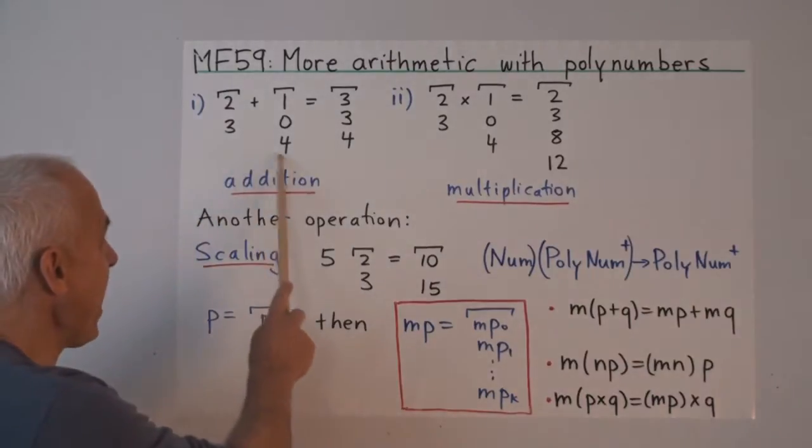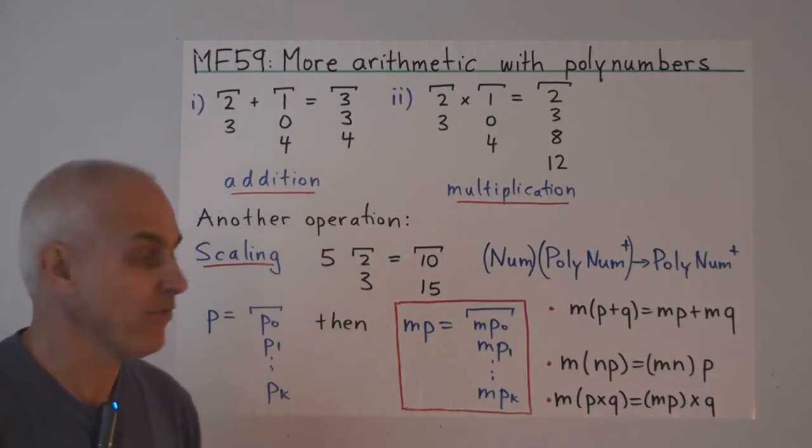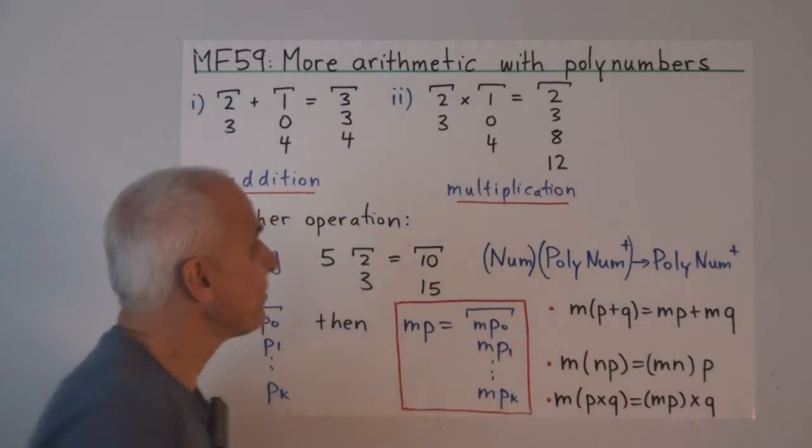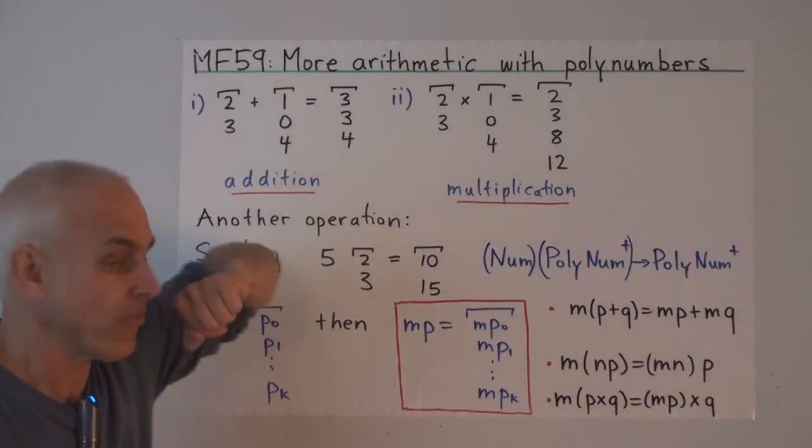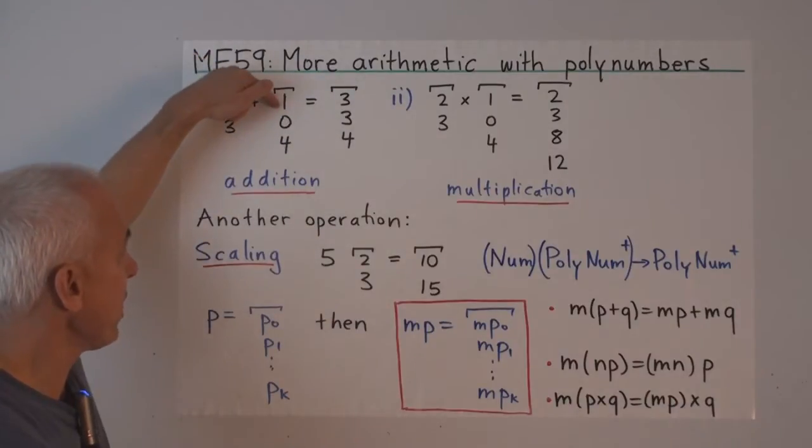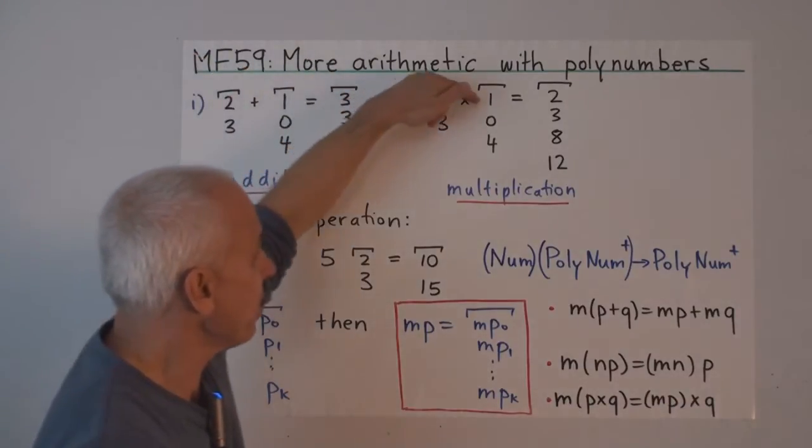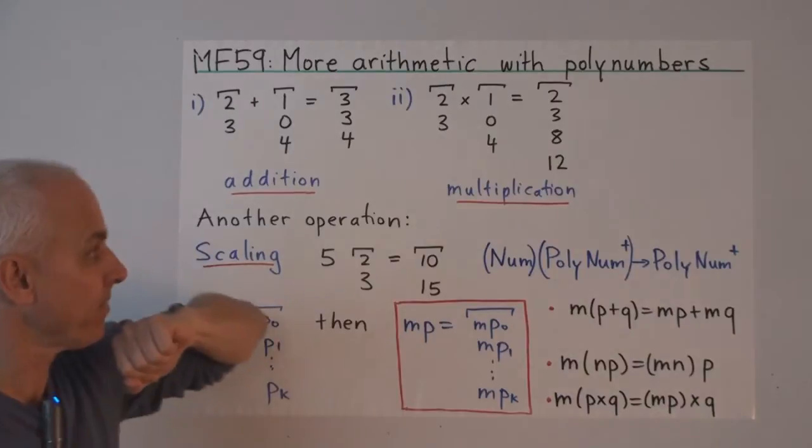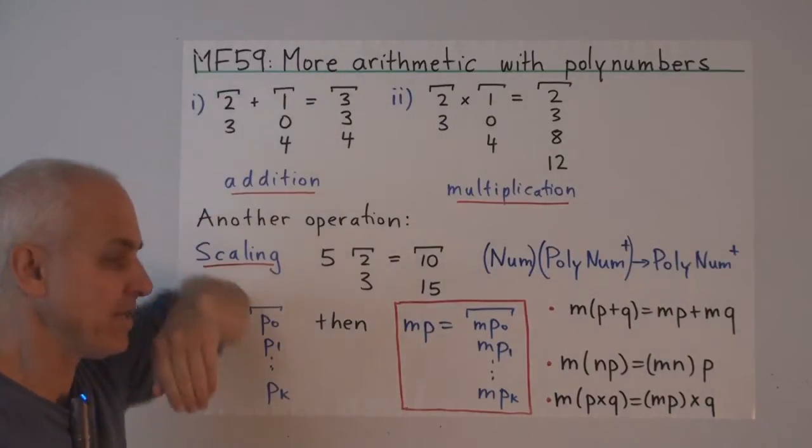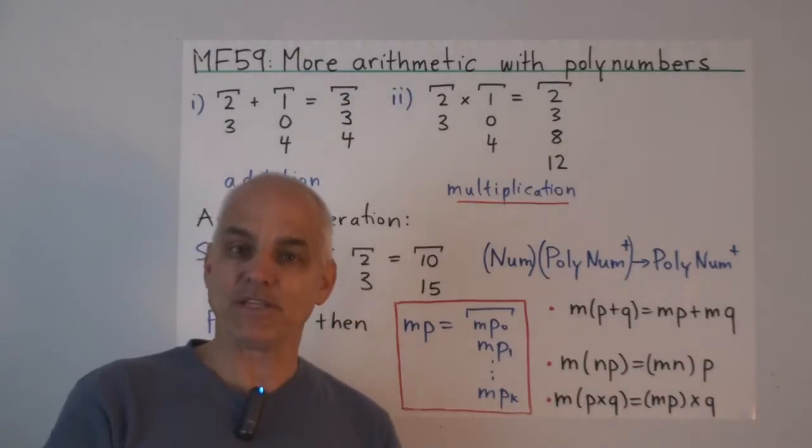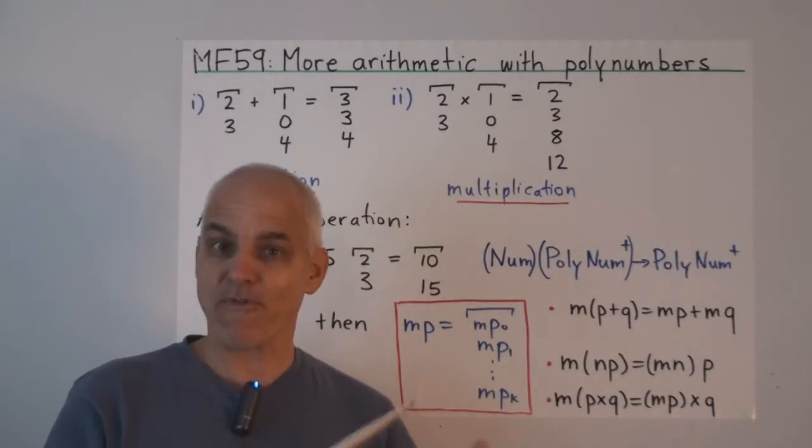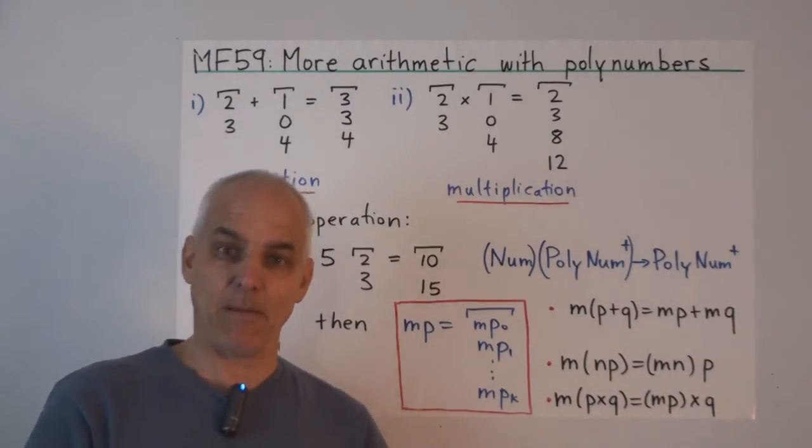If you look at the way we add to positive polynumbers, or the way we multiply them, if you just look at the top level, the zero degree terms, then you just have ordinary addition of numbers, or ordinary multiplication of numbers. So at the top level, at the degree zero, we are just getting ordinary arithmetic, and what happens below is some kind of sophisticated or more fancy arithmetic that's built up from it.